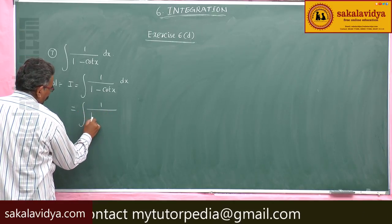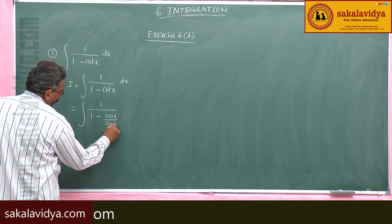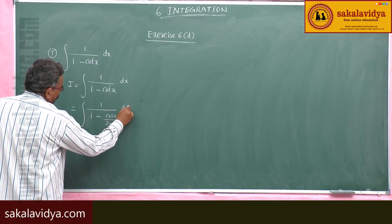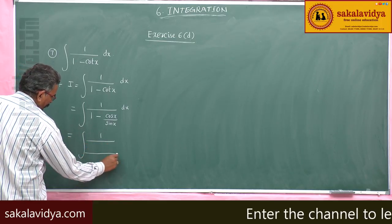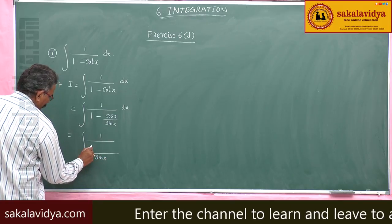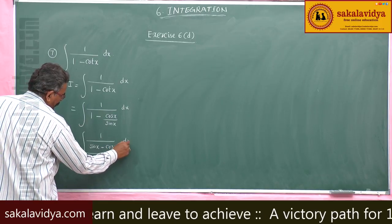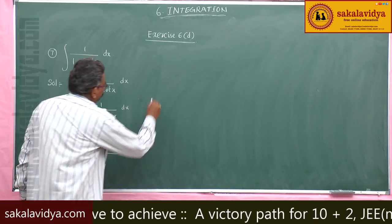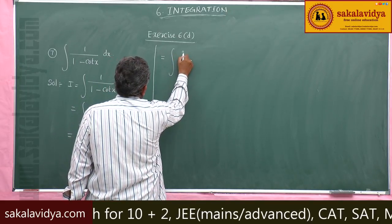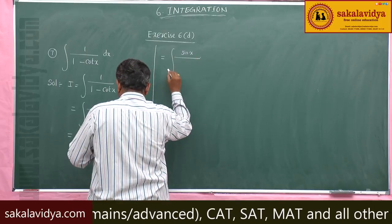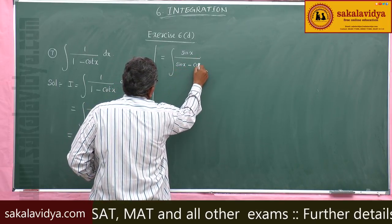So this becomes integral of 1/(1 - cos x/sin x) dx, which simplifies to integral of sin x/(sin x - cos x) dx, as sin x comes up to the numerator.